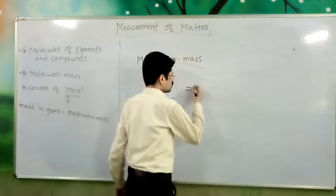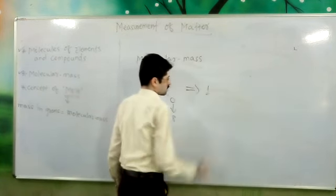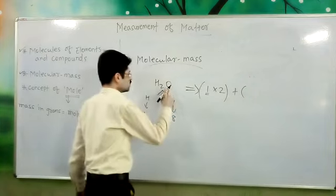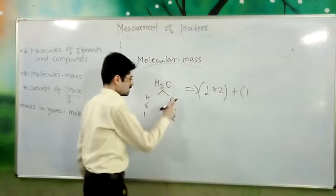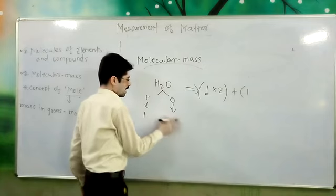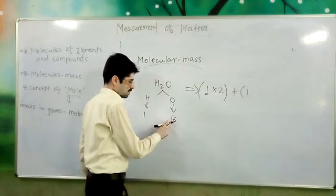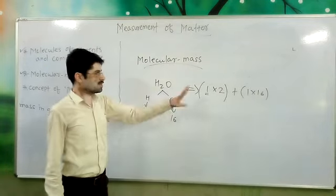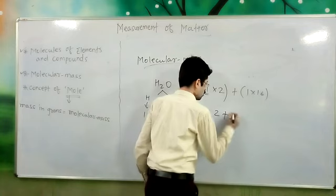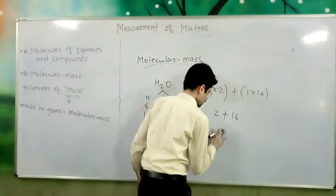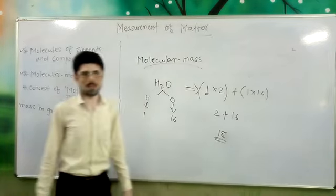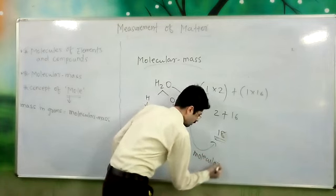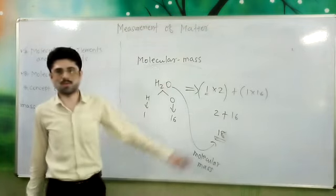In the case of H2O, we calculate the molecular mass as follows: hydrogen has an atomic mass of 1, and there are 2 atoms, so 1 multiplied by 2 equals 2. Plus, there is 1 atom of oxygen with an atomic mass of 16, so 1 multiplied by 16 equals 16. Therefore, 2 plus 16 equals 18. The molecular mass of water is 18.